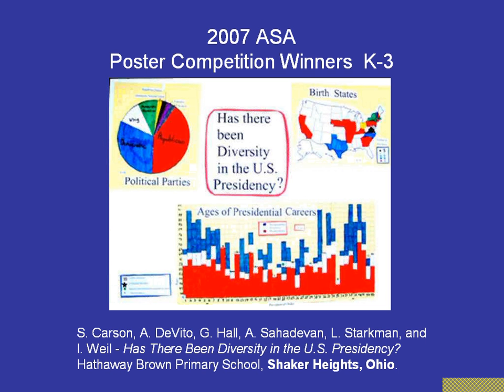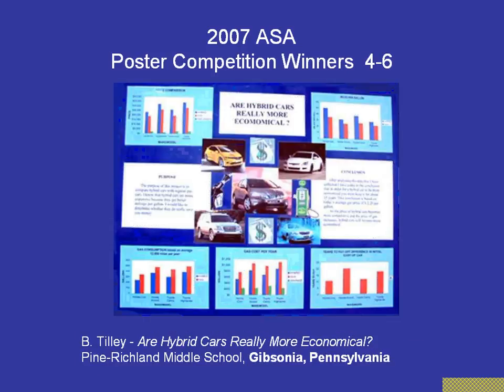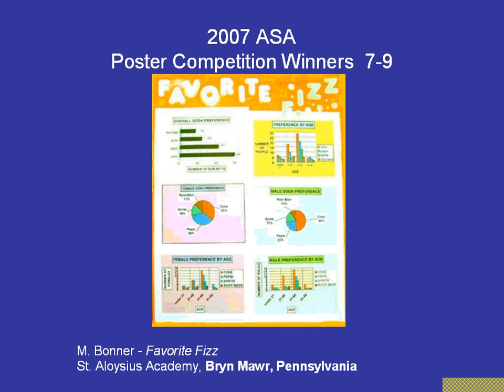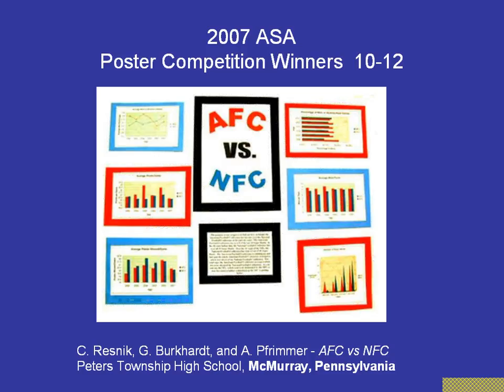Here are a few winners from last year's American Statistical Association competition. Grades K to 3 quite often have graphs done by hand — they don't have to be, but that's pretty typical. There are the grades 4 to 6 winners from Pennsylvania, about hybrid cars — are they really more economical than non-hybrid cars? Grades 7 to 9 dealt with beverages. And in grades 10 to 12, the fourth poster compared the American Football Conference to the National Football Conference. There were actually two winners of grades 10 to 12.